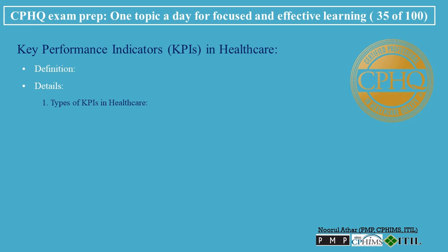Types of KPIs in Healthcare: Patient Satisfaction Scores, measuring the satisfaction levels of patients with the care they received. Readmission Rates — the frequency at which patients are readmitted to a hospital after discharge, which can indicate the quality of care.